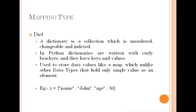Next is Mapping Type. In Python, the mapping type is Dictionary. It represents a set of key-value pairs. A dictionary is a collection that is unordered, changeable, and indexed. For example, x equals curly brackets with key 'name' and value 'John', and key 'age' with a corresponding value. Use dictionaries when you want to represent structured data with key-value pairs.